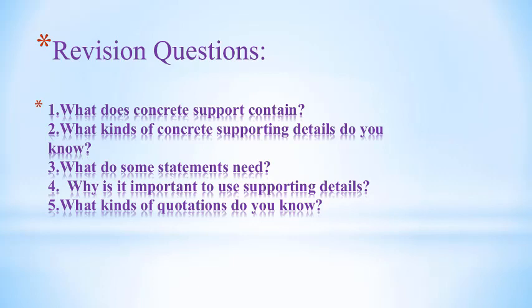To quote is to reproduce what someone else has previously expressed. It is important to give the exact wording of the source and to identify the source. Quotations from reliable and knowledgeable sources are good supporting details. There are two kinds of quotations: direct and indirect. In a direct quotation, you copy another person's exact words and enclose them in quotation marks. In an indirect quotation, you report the person's words without quotation marks, using a supporting expression such as 'according to' or 'believes that.' Reporting verbs include: assert, insist, report, suggest, claim, maintain, say, write, declare, mention, cite, etc.